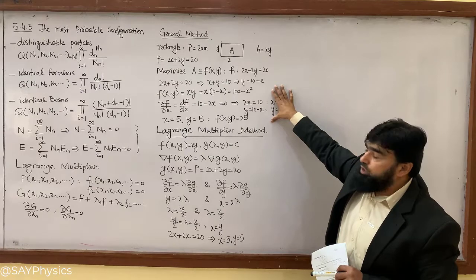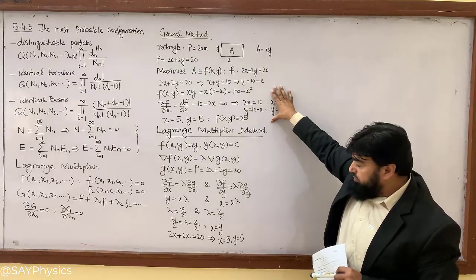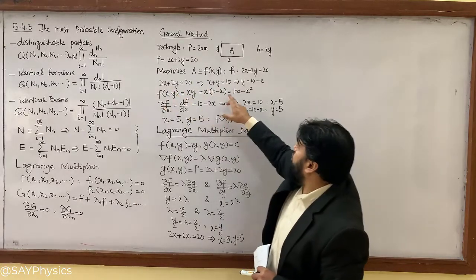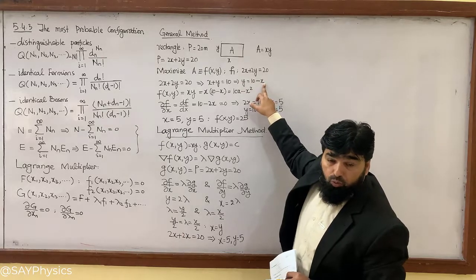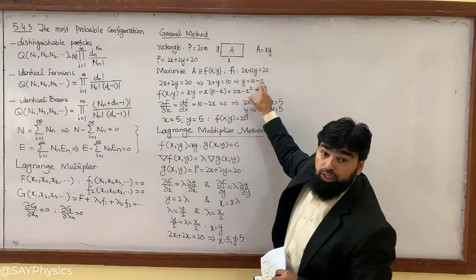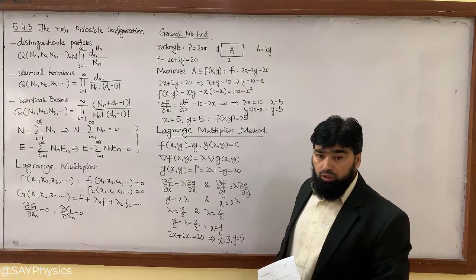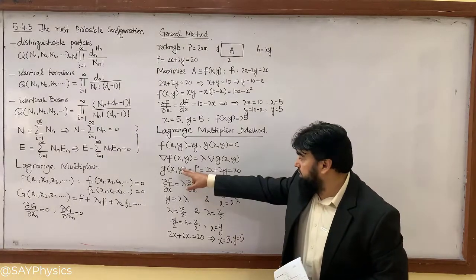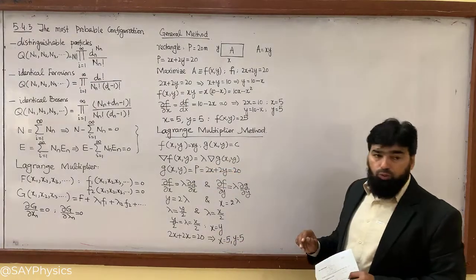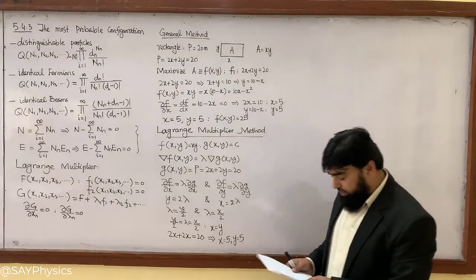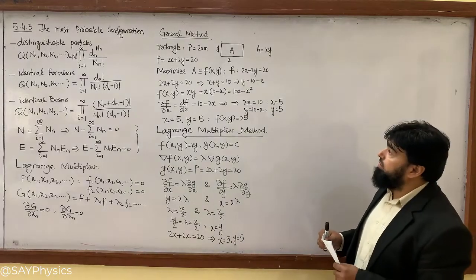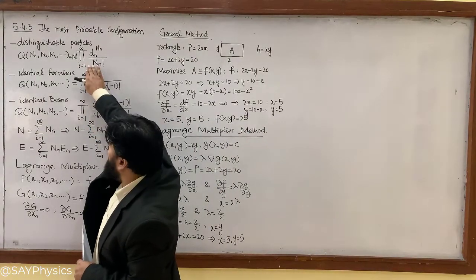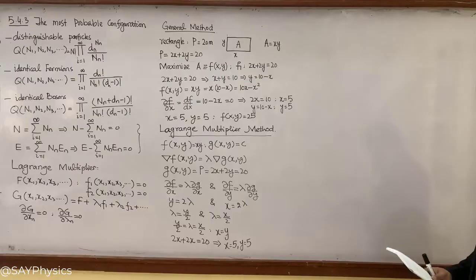This previous approach is called the general calculus method. It worked here because we could easily express y as 10 minus x. However, there will be situations where we cannot isolate y so easily — in those cases, the general calculus method would not work, while the Lagrange multiplier method would still work, because we never needed to isolate a variable explicitly.